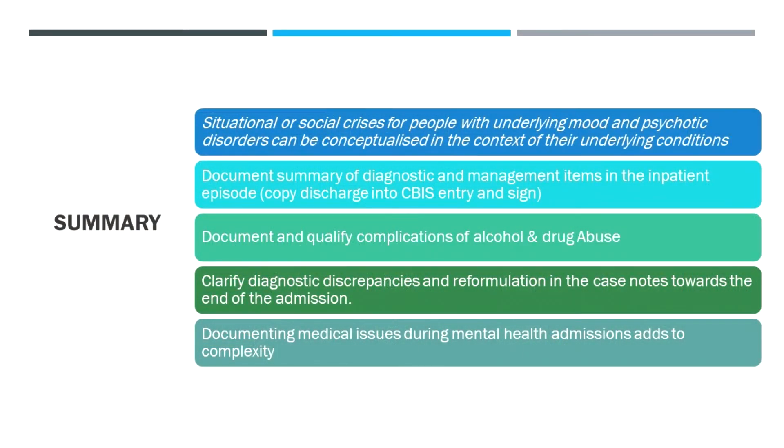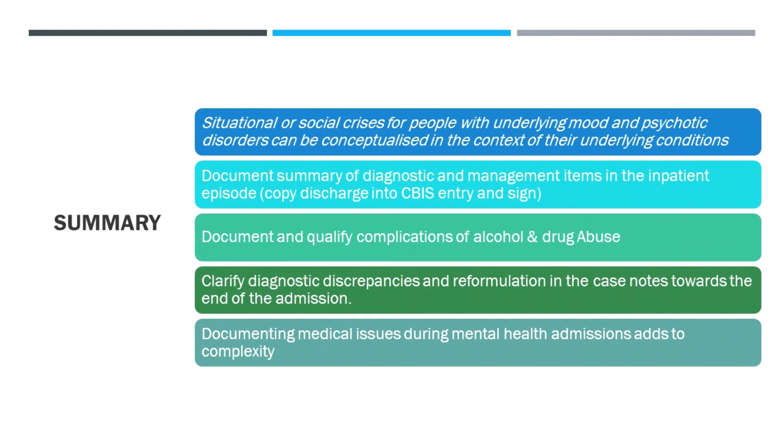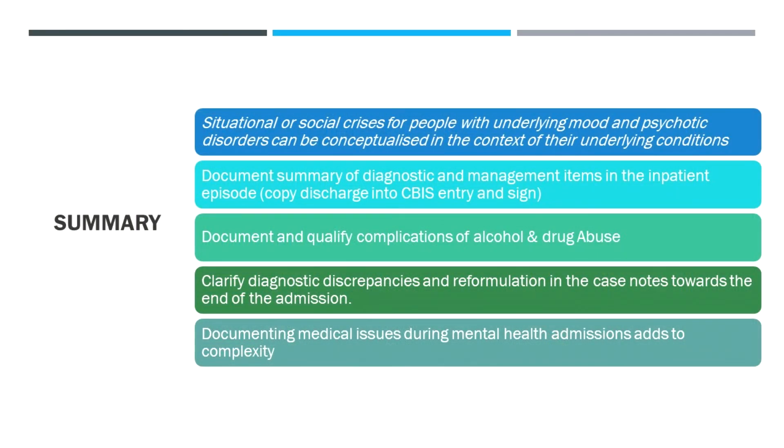To summarize what we've talked about today: we're moving away from terms like situational crisis or social crisis toward acute stress reactions, linking them specifically with the underlying mental health disorder — whether new or pre-existing. We want to document more of the diagnostic workup and thought process in admission and progress notes rather than saving it for the discharge summary. We want to document and qualify complications of drug and alcohol abuse, and diagnose and document medical conditions that arise during admission or relate to prescribed psychiatric medications. I hope you've picked up one or two tips to improve the quality and specificity of your documentation in mental health and that it contributes to coding improvements in your area. Thanks for listening.